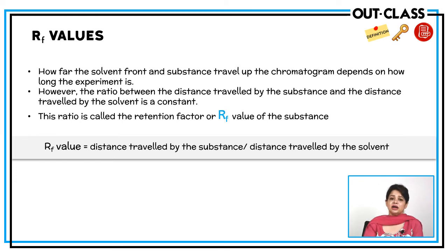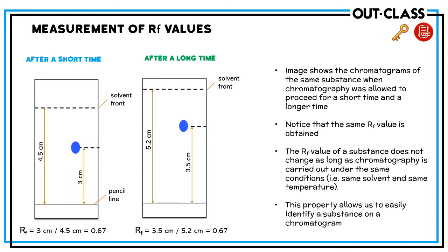These distances are measured from the start line. For example, if we run an experiment for a short time and another for a long time, the spot will be at different positions on each paper, but the ratio remains the same. In the short run: 3 over 4.5 equals 0.67. In the long run: 3.5 over 5.2 also equals 0.67. So the RF value remains the same regardless of experiment duration.